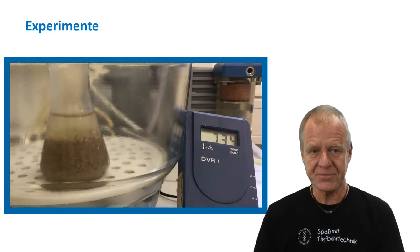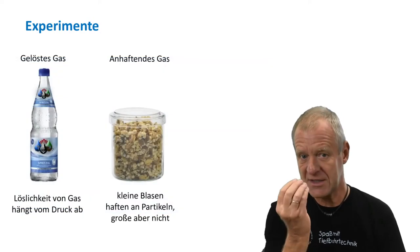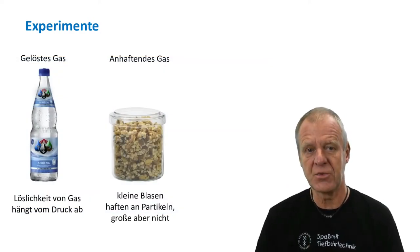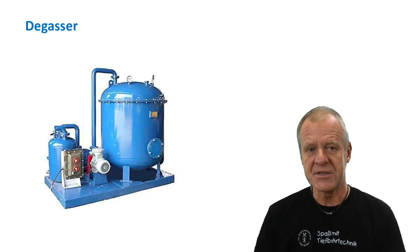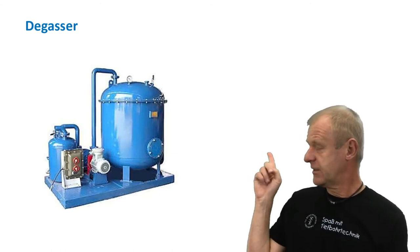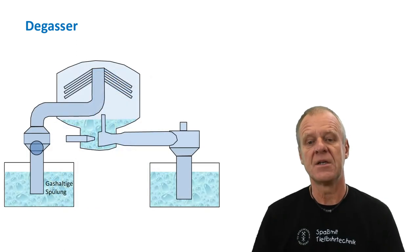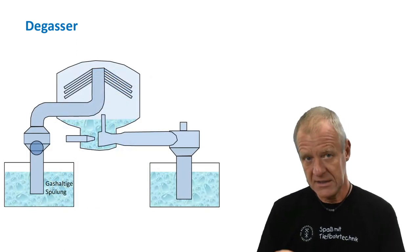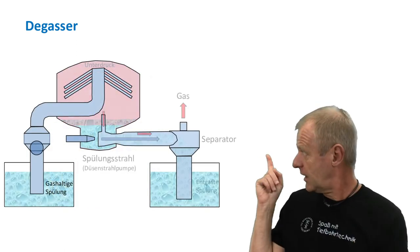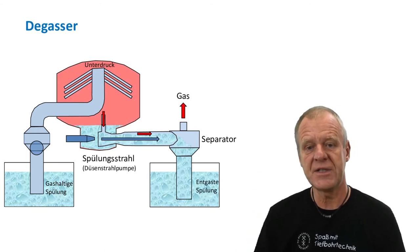These two effects of dissolved gas and clinging gas are removed in a device that is called a degasser, as you can see here. A degasser is a tank which contains a jet nozzle pump, which is the dark blue thing you see here in the middle.